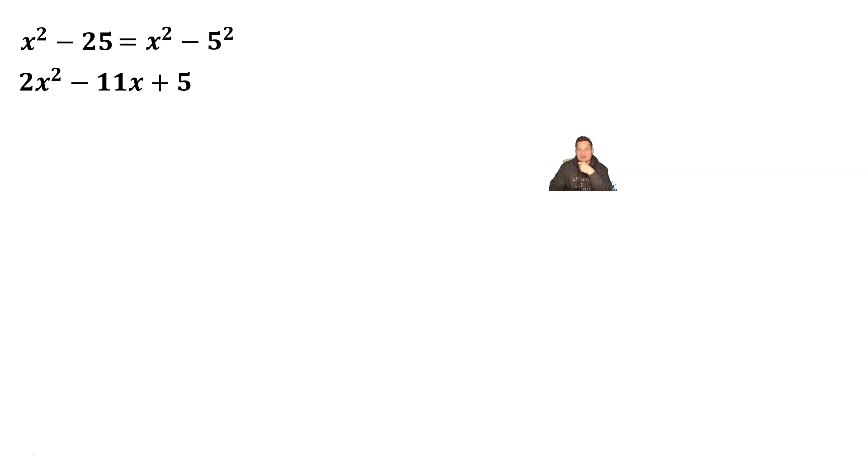So first I'm going to factor that as x squared minus 5 squared, because it's a difference of squares, which then factors into x minus 5 times x plus 5. So this expression represents the first factored form of the binomial.